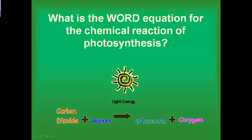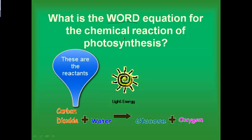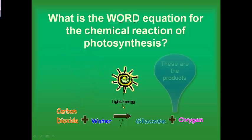This is very important because Cambridge has two different types of equations you need to know: word equations and chemical equations. This is the word equation for photosynthesis: carbon dioxide plus water — and the arrow means 'makes' or 'yields' — so carbon dioxide plus water plus light energy from the sun makes glucose plus oxygen. You need to memorize this one because Cambridge will ask about it and it will be on your test for this unit.